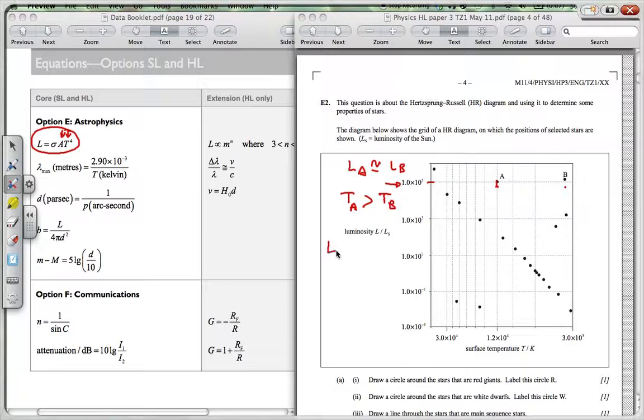So because we have that the temperature of A is greater than the temperature of B, and due to this formula, L is equal to sigma, sigma is a constant, A T to the 4. Therefore, because TA here, temperature is higher and the luminosity is the same. Therefore,